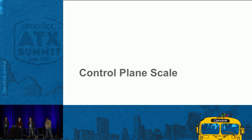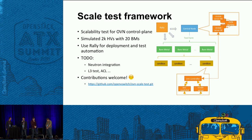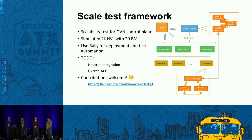Control plane scalability is one of the most important things for an SDN solution. To achieve our targets, we needed an environment to validate scale and verify improvements. Since it's unrealistic to have a big data center just for testing, we made a testing simulation framework just for the control plane. We can simulate 2,000 hypervisors with just 20 bare metal machines, and we use Rally for deployment, which is familiar in the OpenStack community.